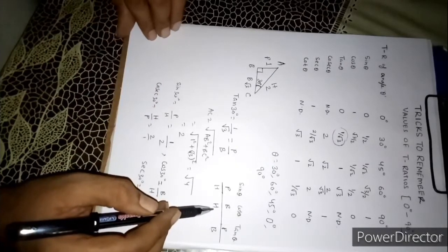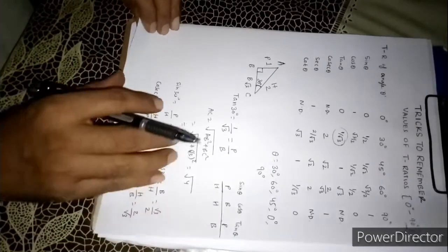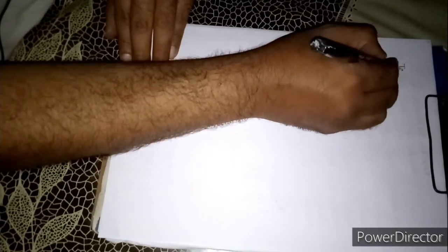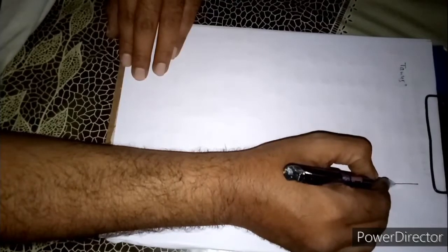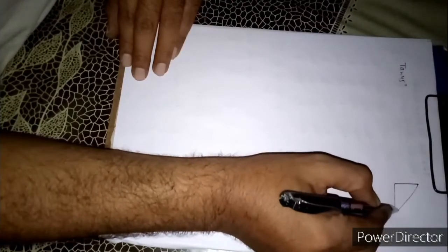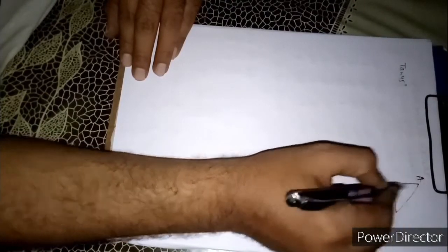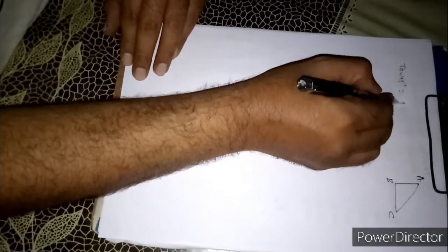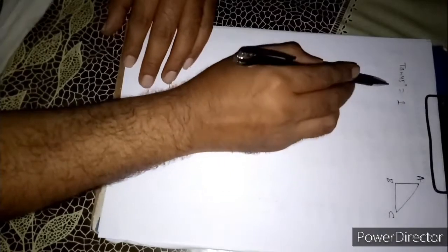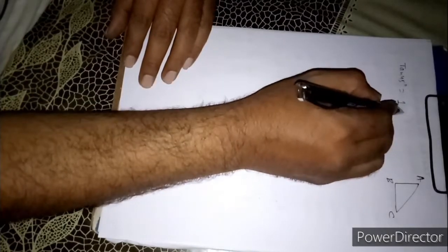So let us take another example if it is tan 45 degree. First we will draw a right angled triangle and give it any name ABC. Tan 45 means 1. Tan theta means what? P by B.